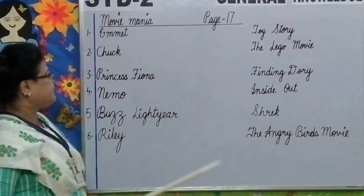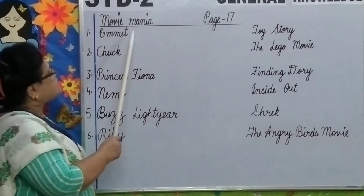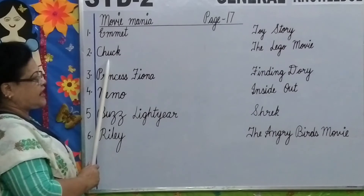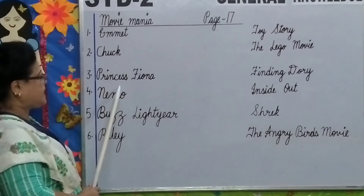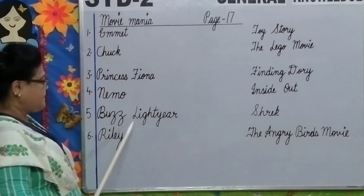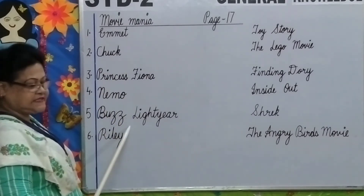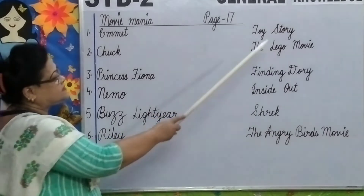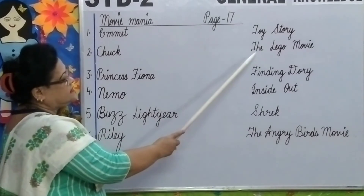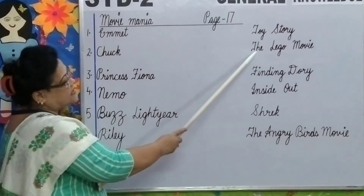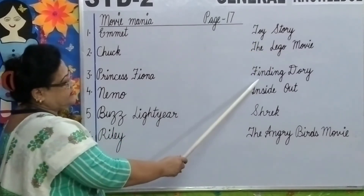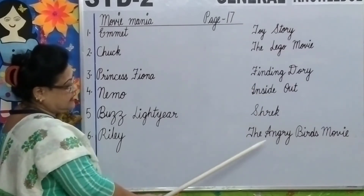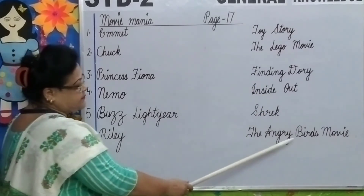Now, children, we will first read the characters: Emmet, Chuck, Princess Fiona, Nemo, Buzz Lightyear, Riley. Now the animation films: Toy Story, The Lego Movie, Finding Dory, Inside Out, Shrek, The Angry Birds Movie.